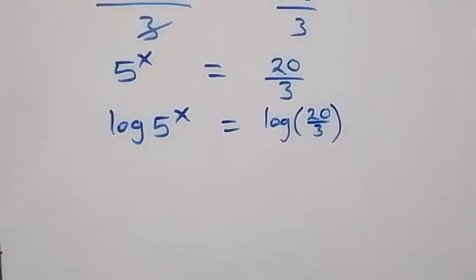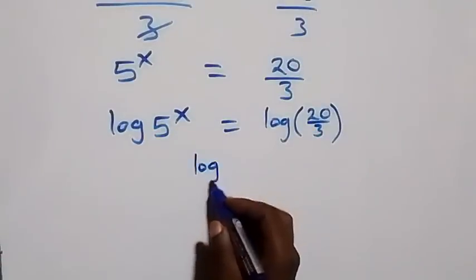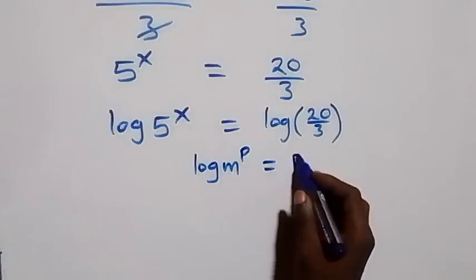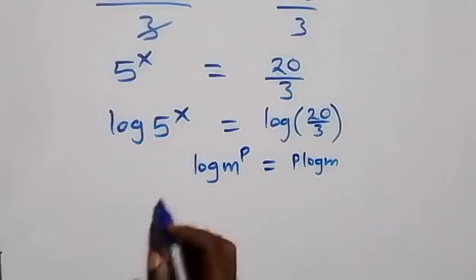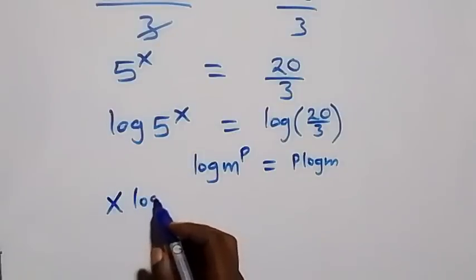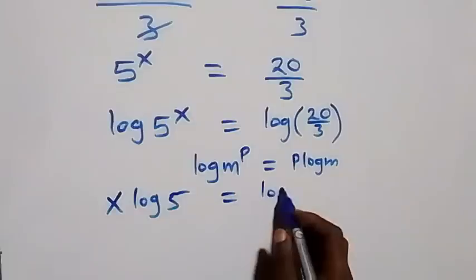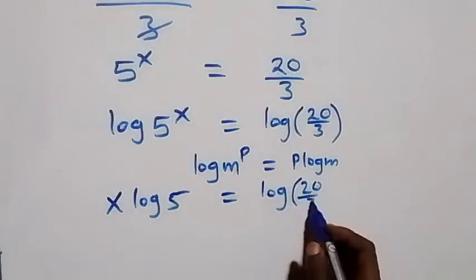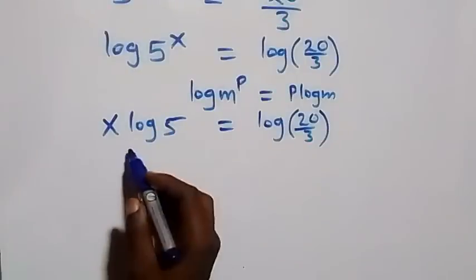From the power law of logarithm, log m raised to power p is the same thing as p log m. So what we have here becomes x log five equals to log twenty over three.